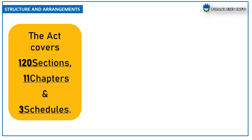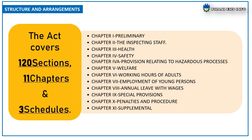Regarding the structure and arrangement of the Factories Act 1948: the act covers 120 sections, 11 chapters and 3 schedules. The chapters are: Chapter 1 Preliminary, Chapter 2 The Inspecting Staff, Chapter 3 Health, Chapter 4 Safety, Chapter 4A Provisions Relating to Hazardous Processes, Chapter 5 Welfare, Chapter 6 Working Hours of Adults, Chapter 7 Employment of Young Persons, Chapter 8 Annual Leave with Wages, Chapter 9 Special Provisions, Chapter 10 Penalties and Procedure, and Chapter 11 Supplemental.